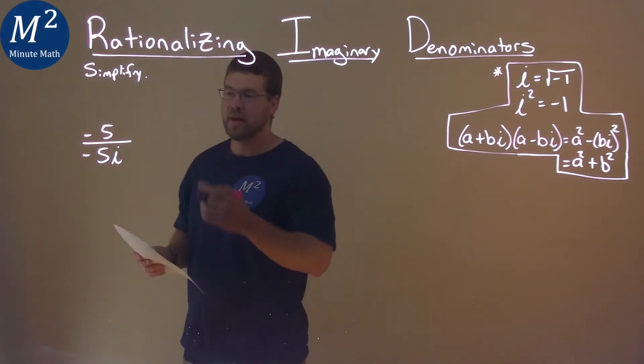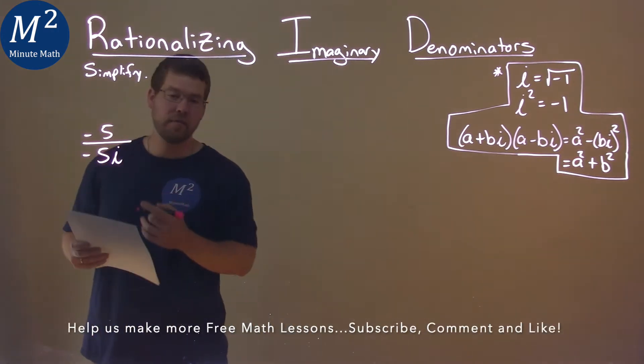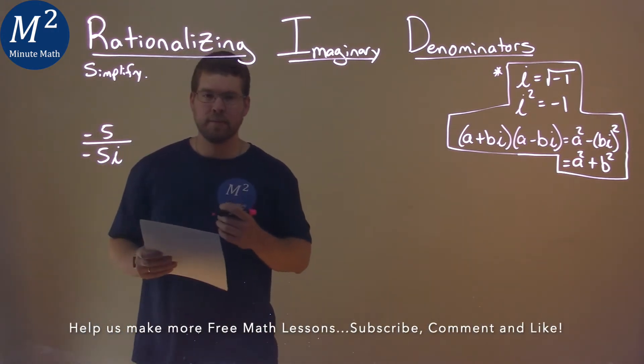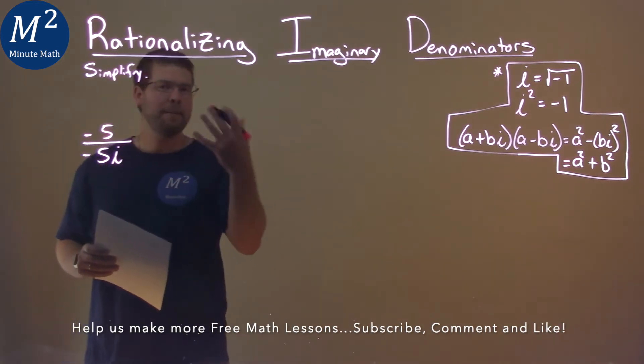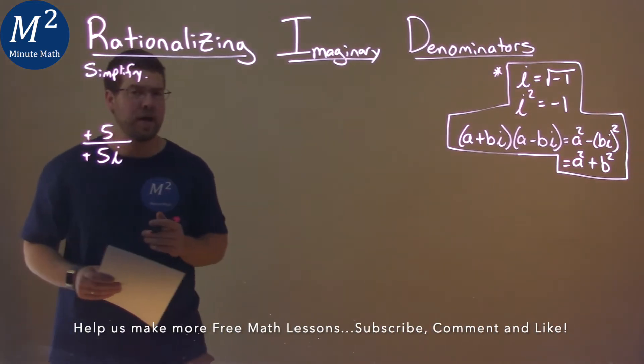We're given this problem right here: negative 5 over negative 5i, and we need to simplify. First thing I'm looking at, negative over negative. Boom! Cancel them out. Positive for positive. Makes it easier.